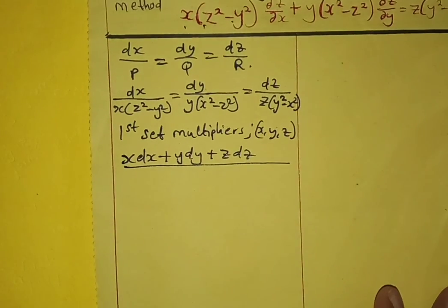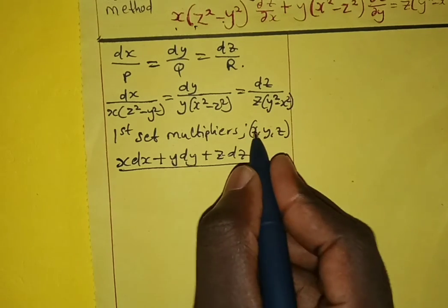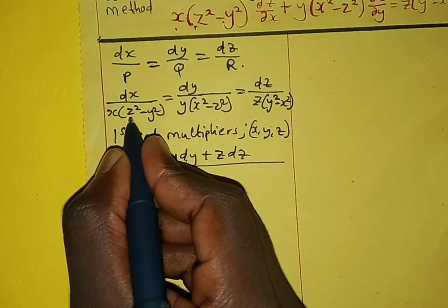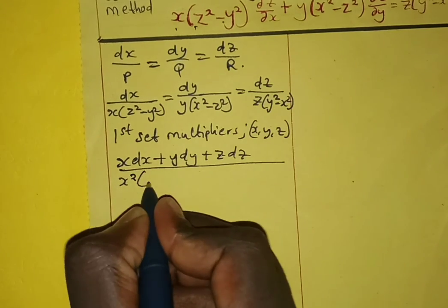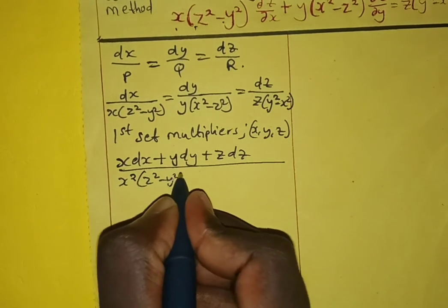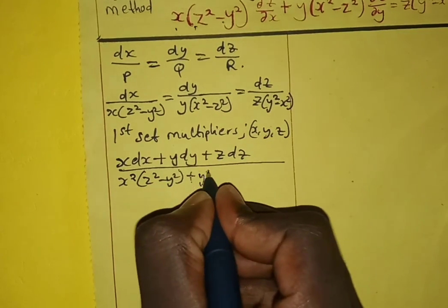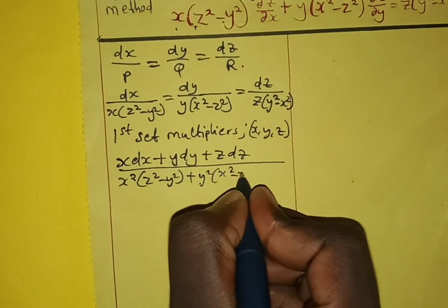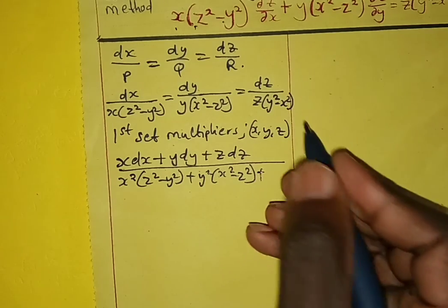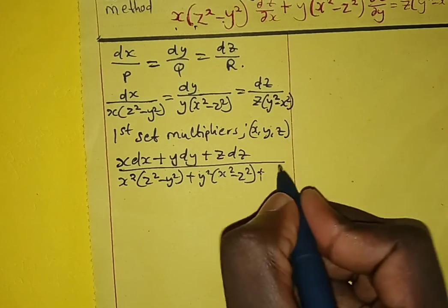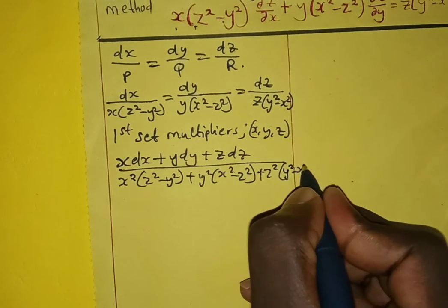We multiply with the denominator and add: x times x(z² minus y²) gives x²(z² minus y²), plus y times y²(x² minus z²), plus z times z²(y² minus x²). Expanding these terms we get x²z² minus x²y², plus y²x² minus y²z², plus z²y² minus z²x².